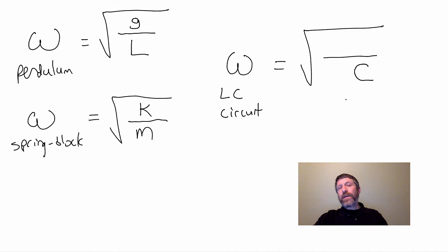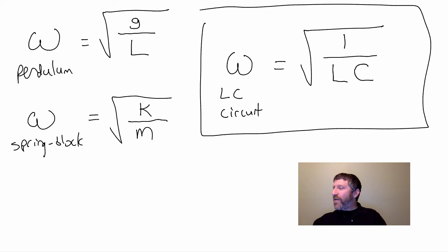Will a big inductor make this thing oscillate faster or oscillate slower? The bigger the inductor, the slower will be the angular frequency. They both go under here. What goes on top? Just a one. So this is the angular frequency of an LC circuit.